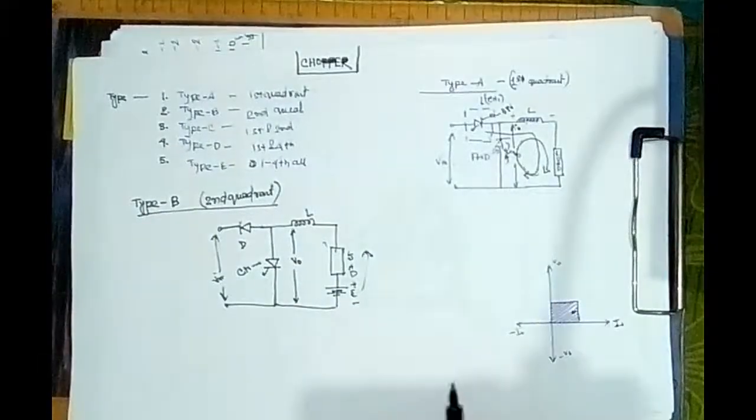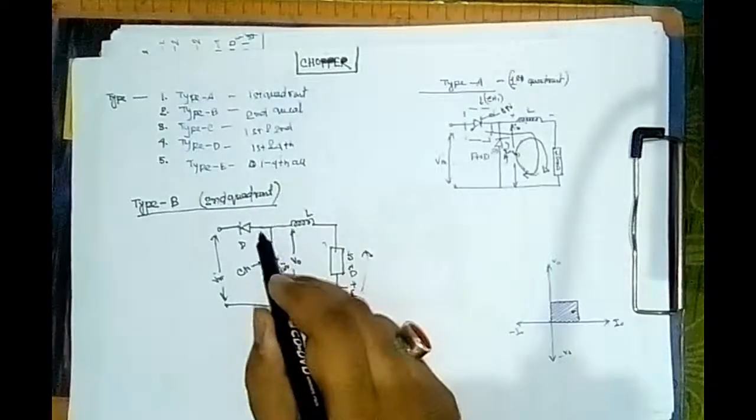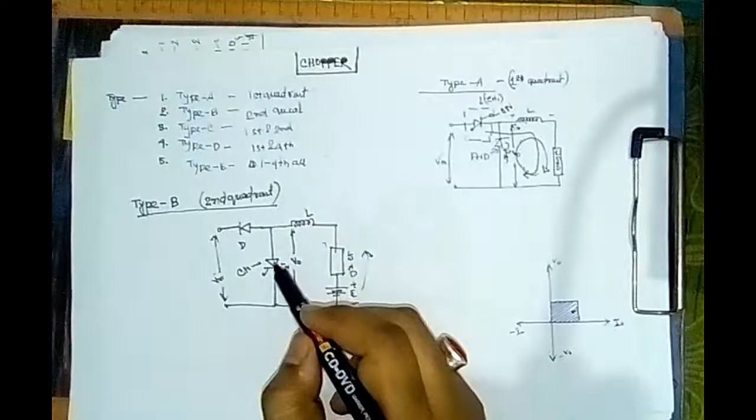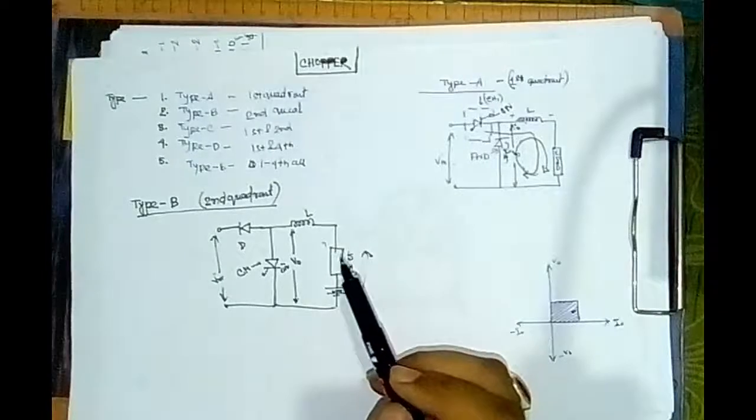Now, the circuit operation: when the thyristor is ON, the SCR will be triggered, so it behaves as a closed switch. Then the following events will occur.